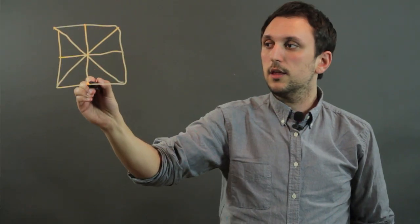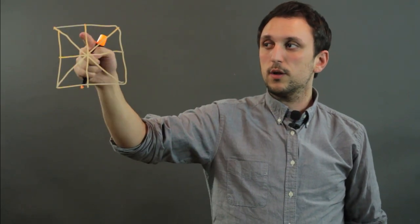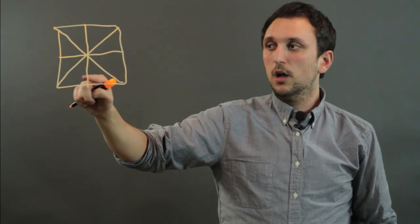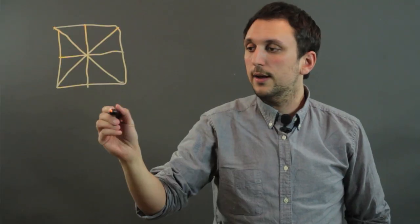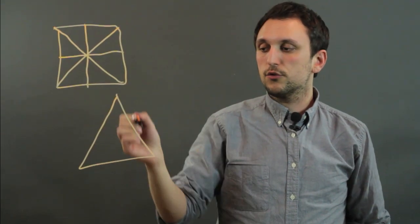We could cut it again like this, and we have one, two, three, four, five, six, seven, eight, so now we have eighths of a square. Now another shape we can use is the equilateral triangle.